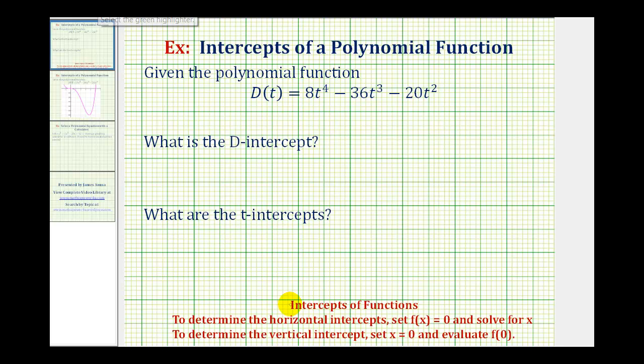In general, if we have a function, to determine the horizontal intercepts, often referred to as the x-intercepts, we set f(x) equal to zero and solve for x. To determine the vertical intercept or the y-intercept, we set x equal to zero or evaluate f(0).